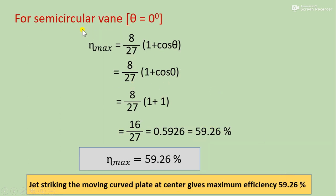For a semi-circular vane, theta equals 0, so cos 0 equals 1, giving (1 + cos theta) = 2. Therefore eta_max equals (8/27) times 2 equals 16/27, which is 0.5927 as a fraction, or 59.27% as a percentage. So for a semi-circular vane, the maximum efficiency is 59.27%.